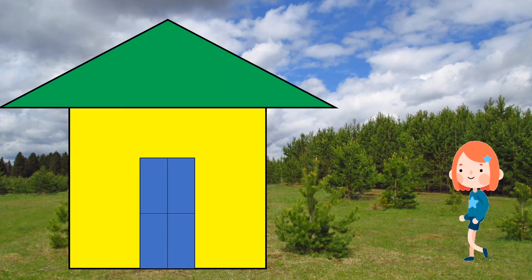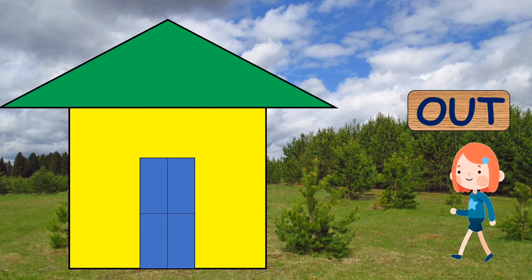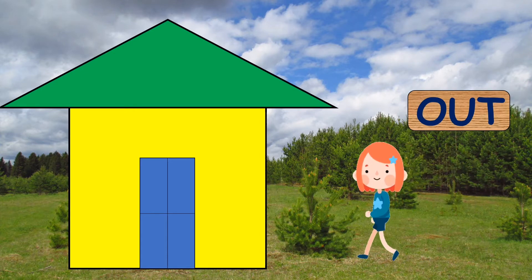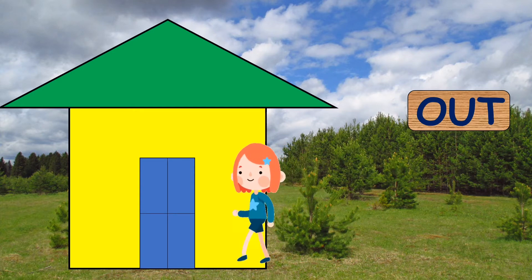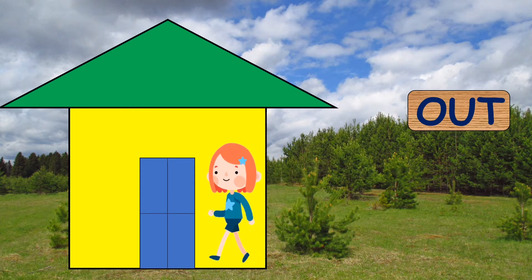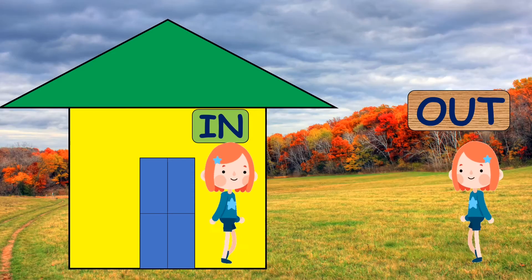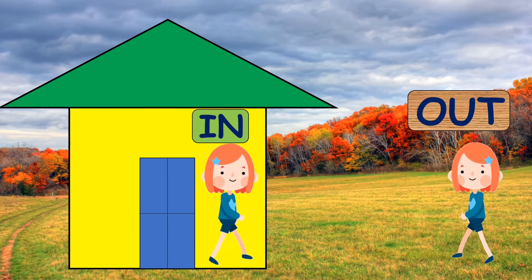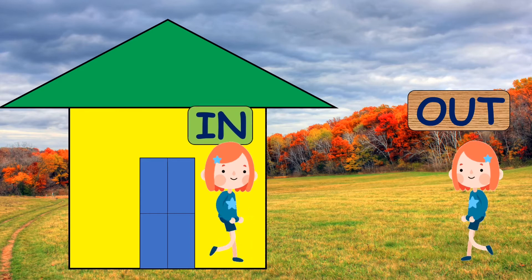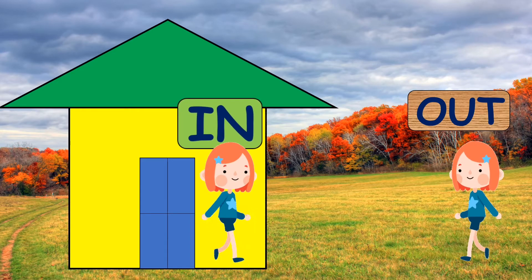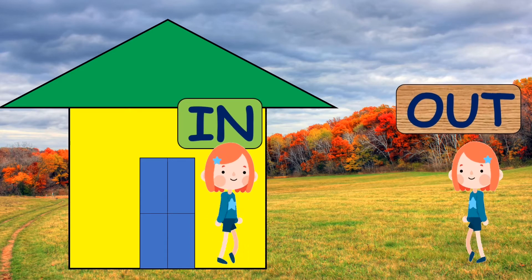This is Pihu's house and this is Pihu. Pihu is outside from the house. Right now Pihu is going in the house. Pihu is in the house. This is the in position. And this is the out position. Pihu in. And in. And out.